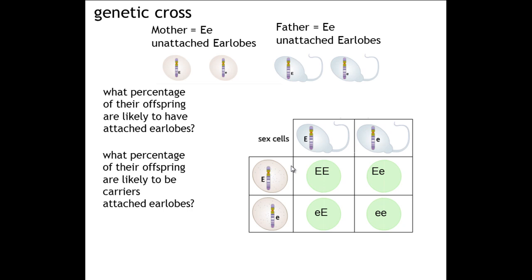But this doesn't mean that if these individuals had three kids, they couldn't all have attached earlobes — it would just be unlikely. The first child having that genotype would be a one in four chance, the second one in four, and the third one in four, so there would be a one in 64 chance overall. It is possible, but it's unlikely.